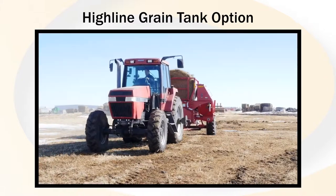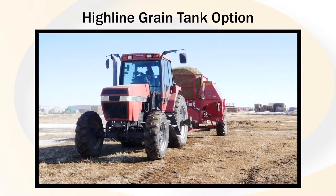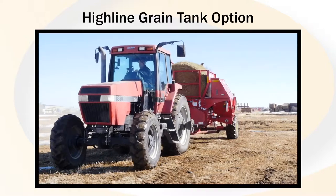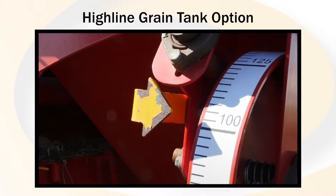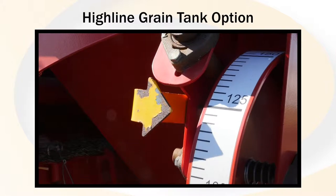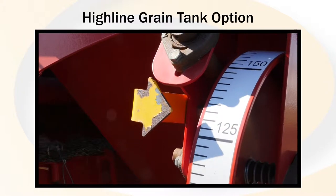The grain insertion system is a ground driven operation, driven off of the left wheel assembly. This video will step through the calibration procedure and sprocket selection for the intended rate of product.